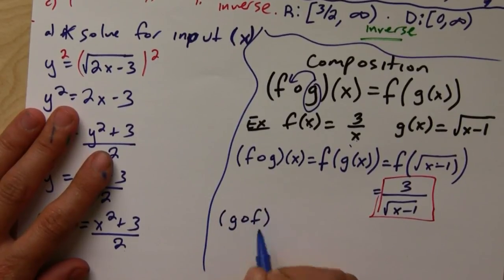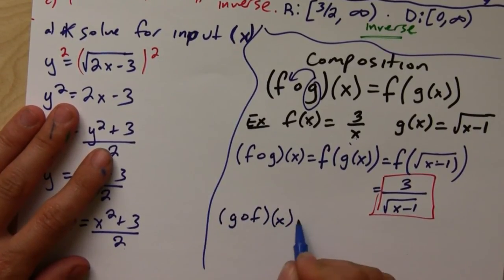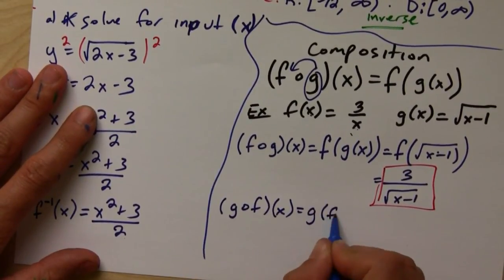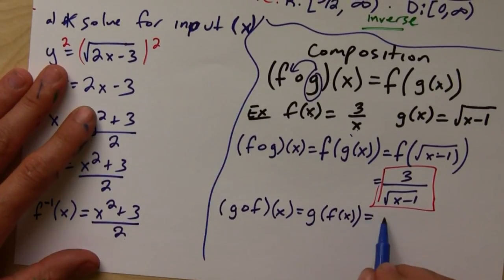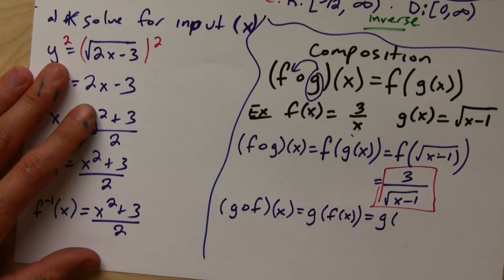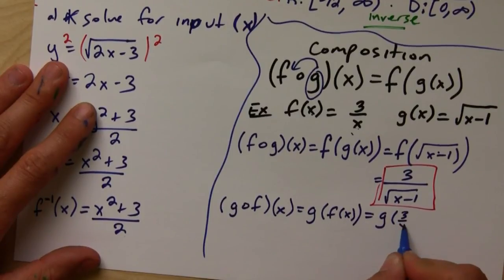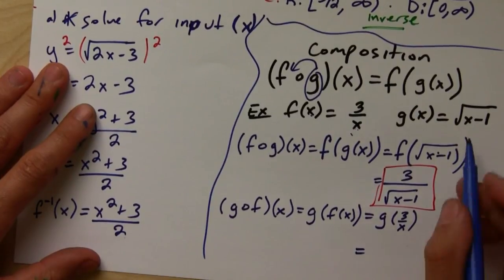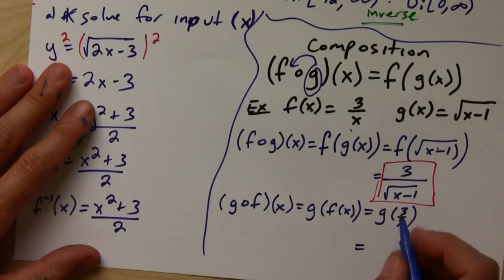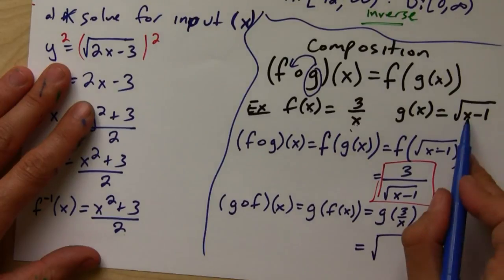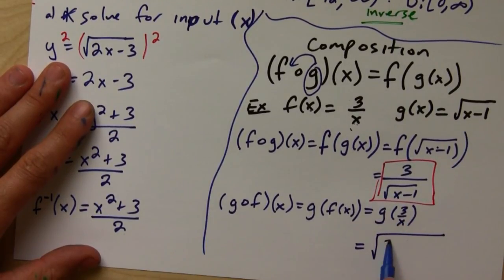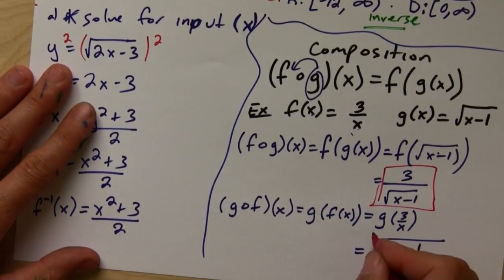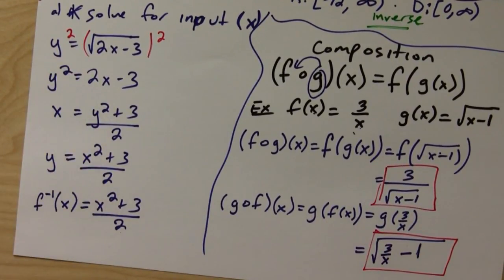I can also do G of F — G composed with F is the same thing but backwards. This tells me to plug F inside of G. F is 3 over X, so I plug that into every X inside of G: square root of (3 over X) minus 1. You can simplify that as well, but we'll leave it like that just to understand the idea.